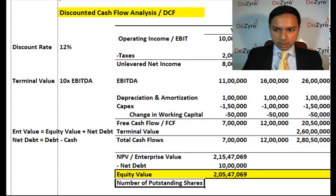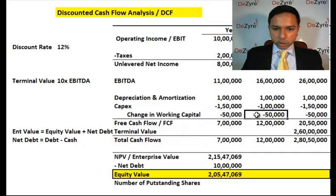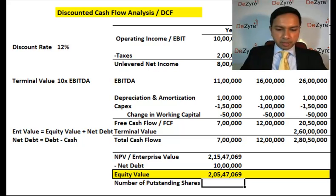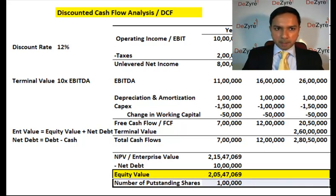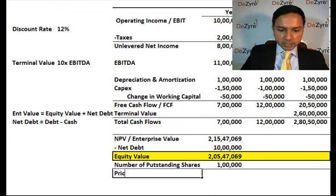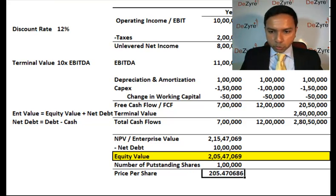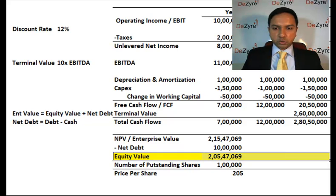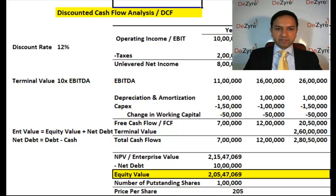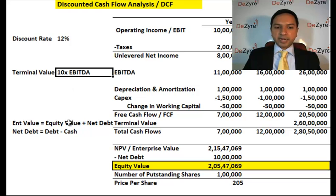Let's say this company has 1 lakh shares outstanding — it could be private or public, you can do a DCF for either. Your price per share equals equity value divided by shares outstanding, which gives 205 rupees per share. That is how much one share of your company is worth. That is the DCF — that is how you calculate the valuation of a company using a discount rate, a terminal multiple, enterprise value, and net debt.